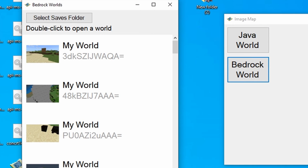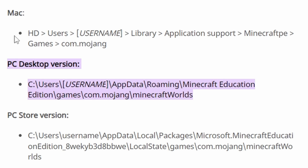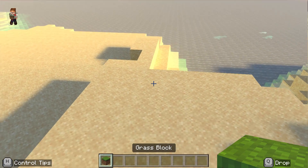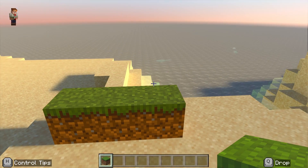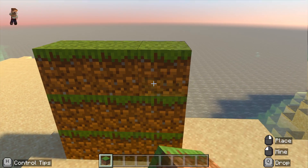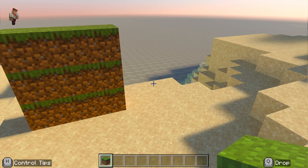Where it says 'Select Saves Folder', we want to point it to the correct directory for the version we're using. I'm using the PC Store version, but most of you are probably using the PC Desktop version. Either way, you can find your world, point it there, and select the folder.